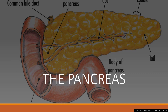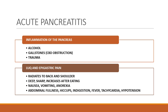Now let's talk about the pancreas. Pancreatitis is inflammation of the pancreas; it can be either acute or chronic. Acute pancreatitis usually occurs as a result of exposure to alcohol, gallstones that obstruct the common bile duct, or trauma to the pancreas. The patient will present with left upper quadrant and epigastric pain — versus cholecystitis, which was on the right.